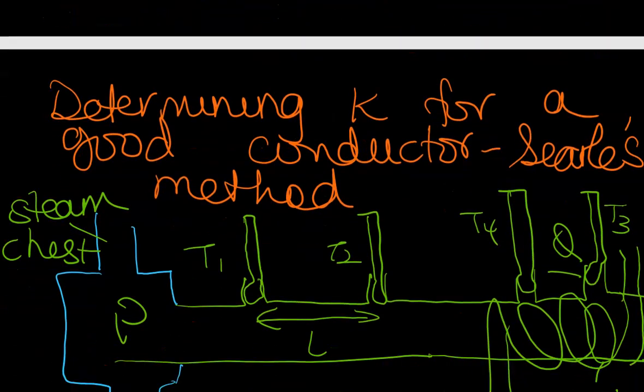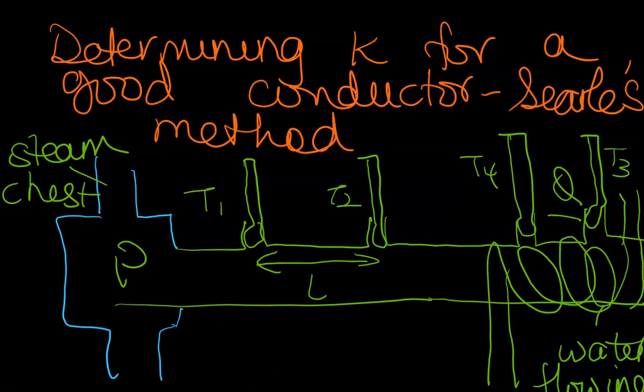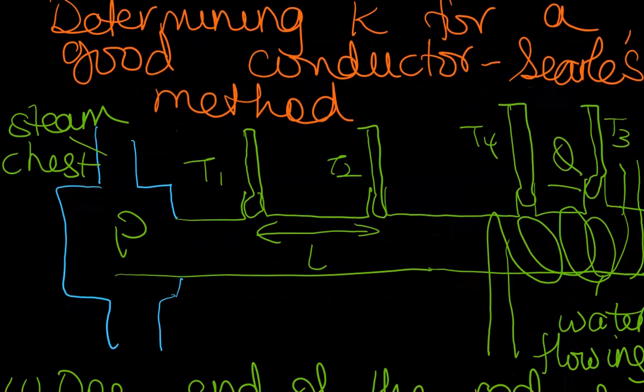Alright, so let's go to using the Searle's apparatus. And if you look at my drawing, firstly I am going to explain it. What is the setup? And then we look at the method. Now you have a cylindrical rod that has a certain cross-sectional area A.